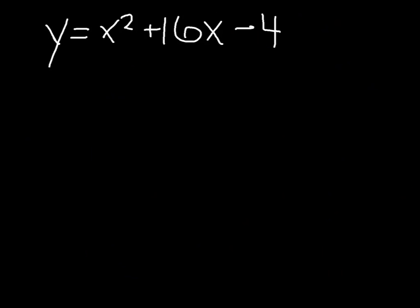So our equation is right here, and the first thing we're going to want to do is take the b value and divide it by 2 and square it.